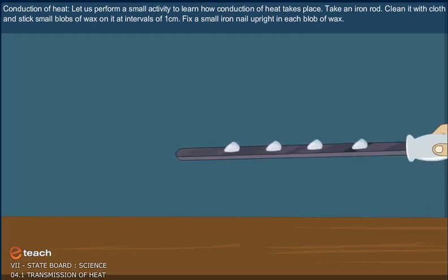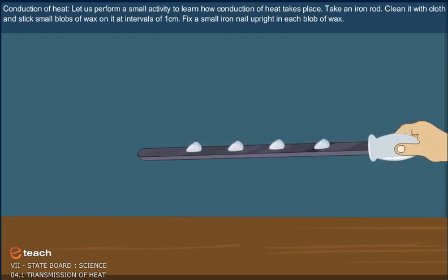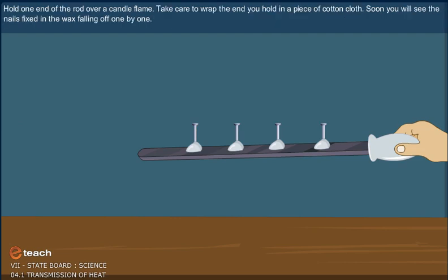Take an iron rod. Clean it with cloth and stick small blobs of wax on it at intervals of 1 cm. Fix a small iron nail upright in each blob of wax. Hold one end of the rod over candle flame. Take care to wrap the iron you hold in a piece of cotton cloth. Soon you will see the nails fixed in the wax falling off one by one.